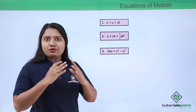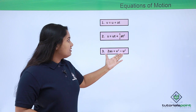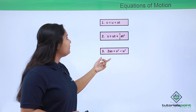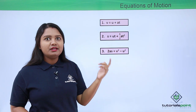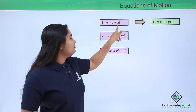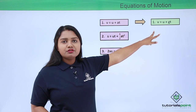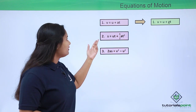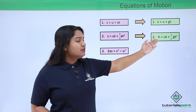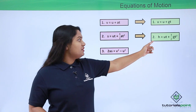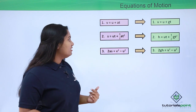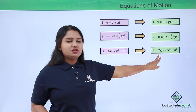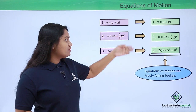Now we convert these equations for freely falling bodies by replacing 's' with 'h' and 'a' with 'g'. The first equation becomes v equals u plus gt. The second equation becomes h equals ut plus half gt squared. The third equation becomes 2gh equals v squared minus u squared.